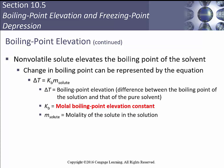For boiling point elevation, the equations in this chapter are simple. The change in temperature is: ΔT = Kb × m, where Kb is the molal boiling point elevation constant and m is the molality. The Kb value is dependent on the solvent — water has a Kb, ethanol has a Kb — and it's unique to that solvent, not the solute.